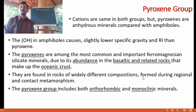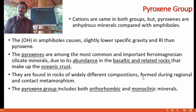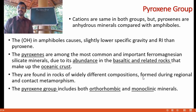Pyroxenes are essential minerals in basaltic rocks which make up the oceanic floor of the earth. Similar cations are found in pyroxenes and amphiboles, but pyroxenes are anhydrous minerals, meaning they do not contain water. The hydroxide in amphiboles causes lower specific gravity and refractive index than pyroxene minerals. Pyroxenes are among the most common and important ferromagnesian silicate minerals, also found in rocks formed during regional and contact metamorphism. Pyroxene minerals belong to two crystal systems — orthorhombic and monoclinic — forming the basis for the classification of pyroxene into two distinct groups.